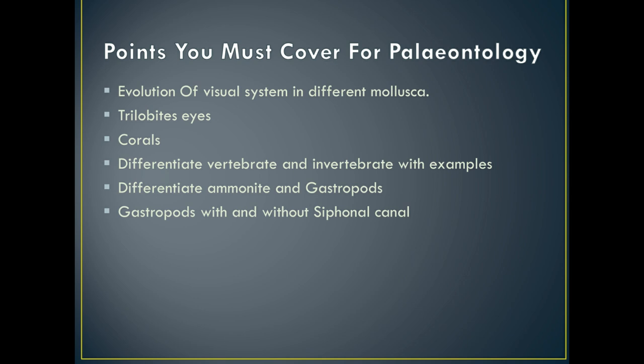Next is the Evolution of the Visual System in Different Mollusca. In previous years it has been asked which mollusks have the best visual system and which have the most primitive type. Although questions may not repeat, you may get questions based on this concept, so while reading the Mollusca part, keep an eye on that. Next is Trilobites' Eyes — in many exams it has been asked which trilobite has eyes and which does not. So while studying trilobites, for each species you should remember which species have eyes and which do not.